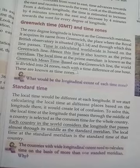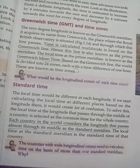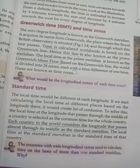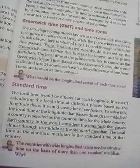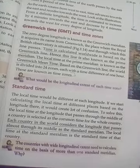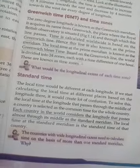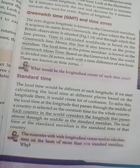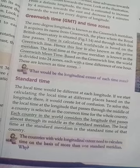The local time at the longitude that passes through the middle of a country is selected as the common time for the whole country. Each country in the world considers the longitude that passes almost through its middle as the standard meridian.